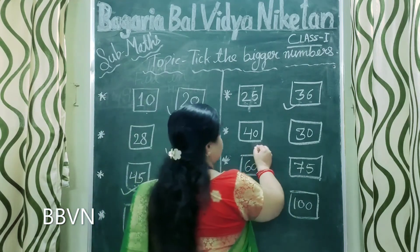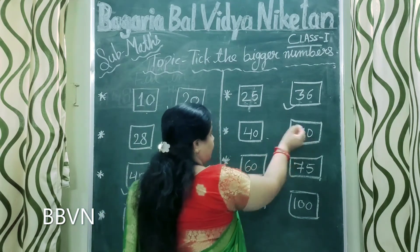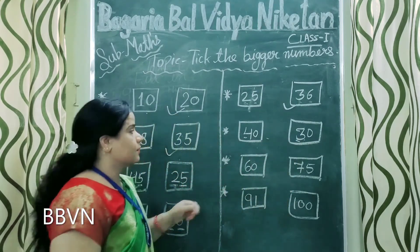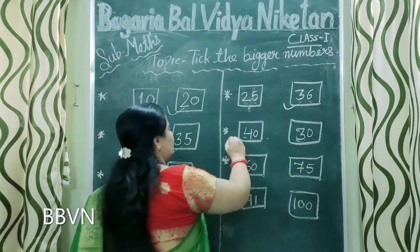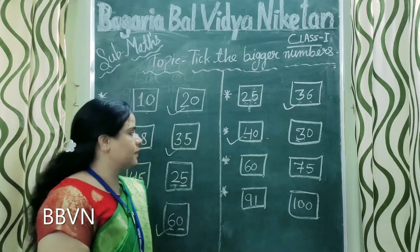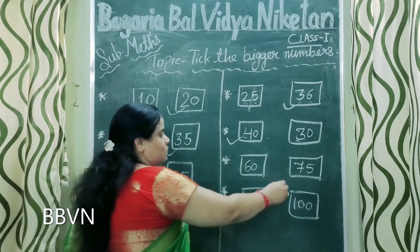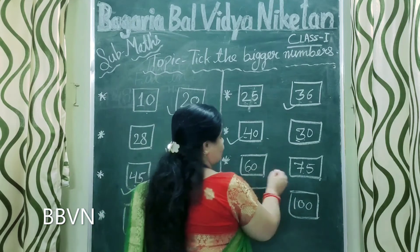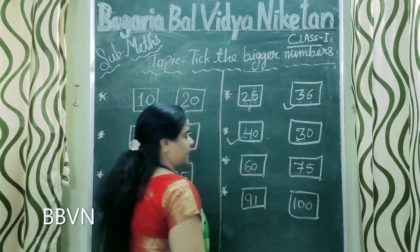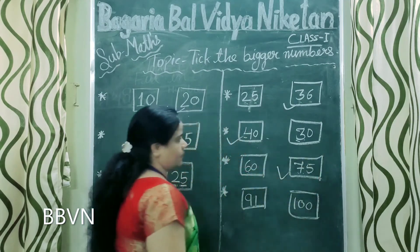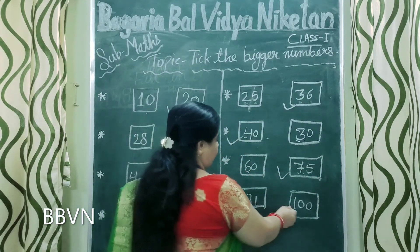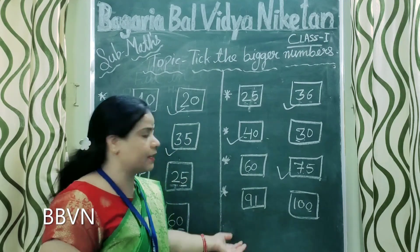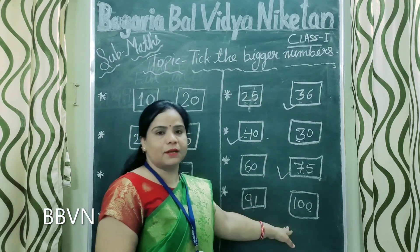So let's see next. Ab dekhiye yahaan par thirty and here forty. Tens place ko find kijiye — tens place pe yahaan three hai, aur yahaan four hai. Four big hota hai na — this is your bigger number. Yahaan par seventy five, aur yahaan sixty. Tens place pe yahaan six hai, yahaan seven hai — seven big hai, so this is your bigger number. And here ninety one, here hundred. Yahaan toh three digits hain — counting mein aapko pata chalta hai ki ninety one ke baad hundred hi big number hoga.